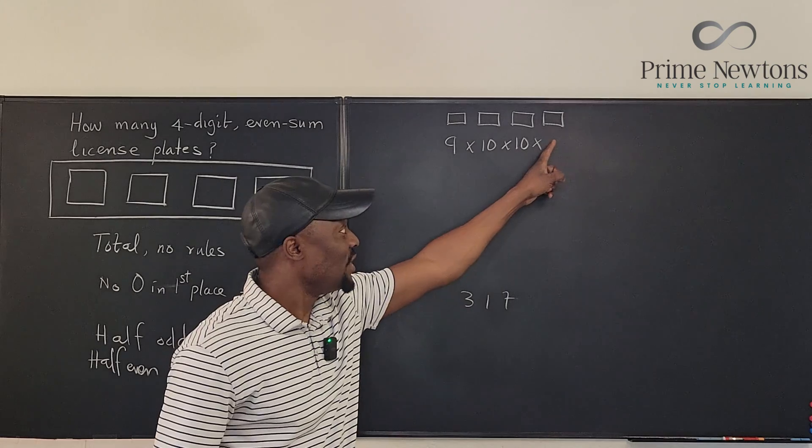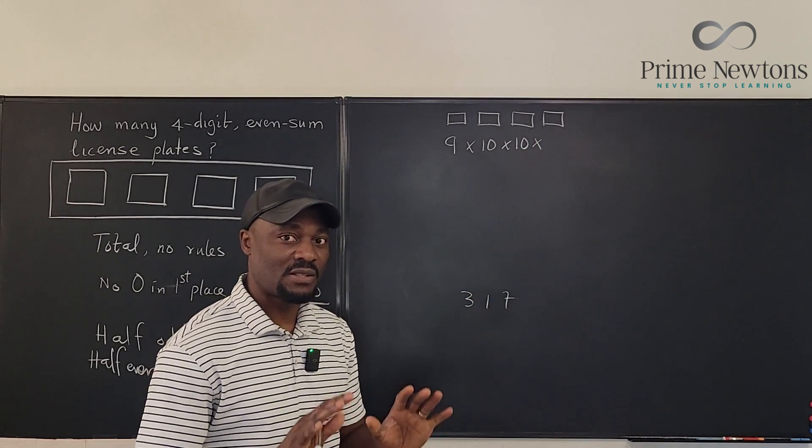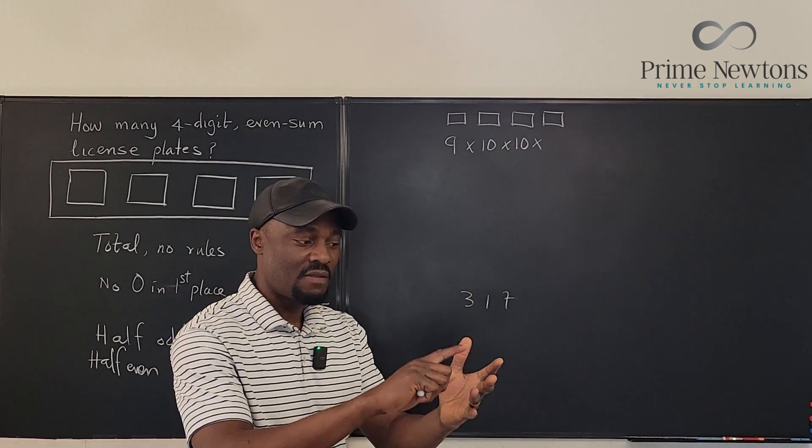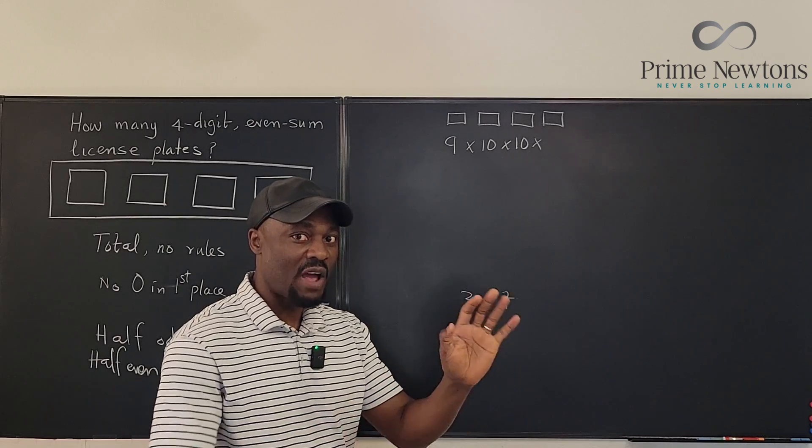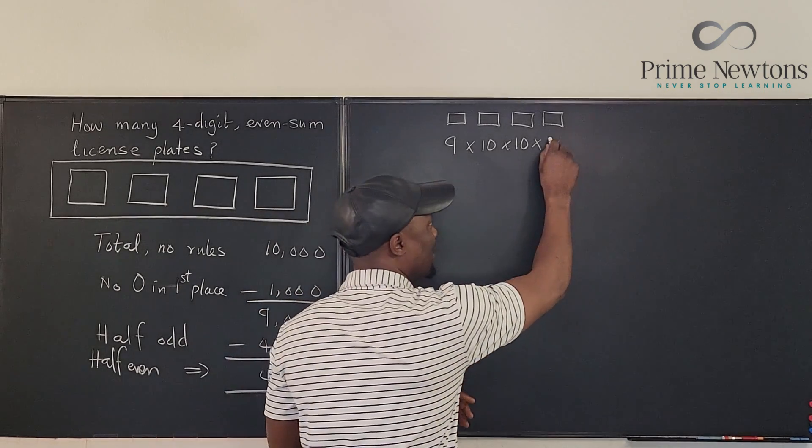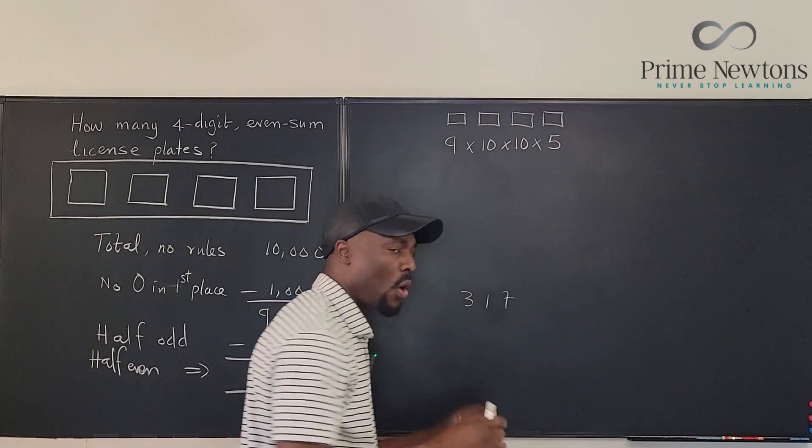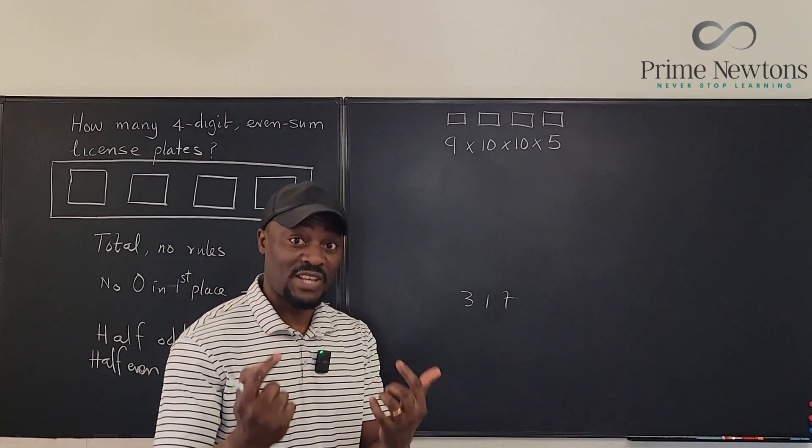I must put another odd number because the sum of two odd numbers will be even. So I cannot put an even number here. I am restricted to just 1, 3, 5, 7 and 9. So I have 5 options in the last spot. What if it was even? It's the same reasoning.